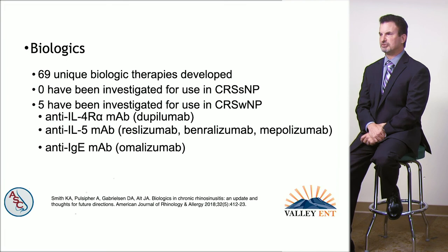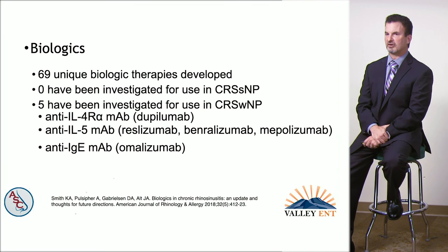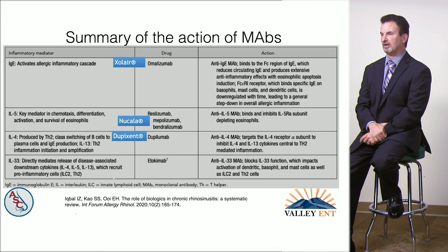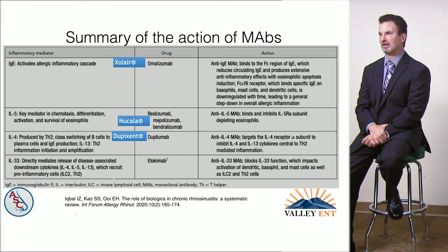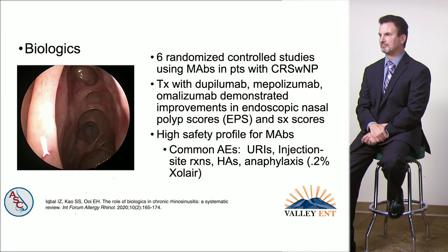To date, 69 unique biologic modifier therapies have been developed — zero have been looked at for patients without polyps, and five have been investigated for patients with polyps, specifically targeting IL-4, IL-5, and IgE. These are monoclonal antibodies directed at these substances. Three of them — omalizumab (Xolair), mepolizumab (Nucala), and dupilumab (Dupixent) — have demonstrated benefit in randomized controlled trials in patients with polyps, decreasing polyp burden based on endoscopy and subjective scores, with a very high safety profile.